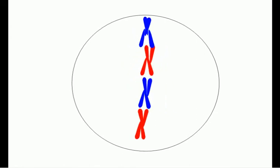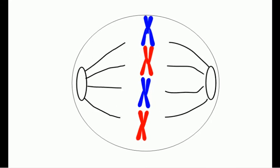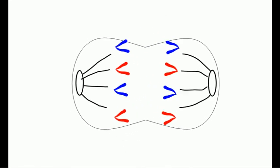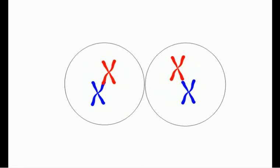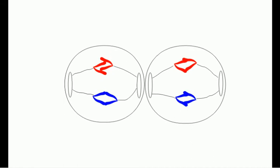The spindles pull the chromosomes apart and the cell splits into two. The chromosomes line up on the spindles again and are pulled apart so there are four daughter cells, containing half the amount of chromosomes as the original parent cell.